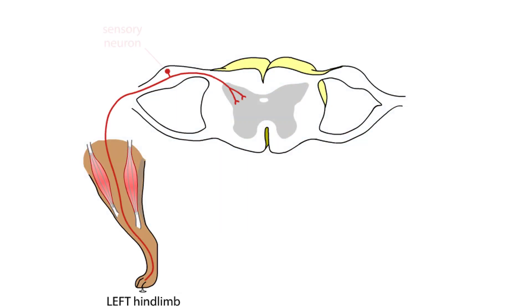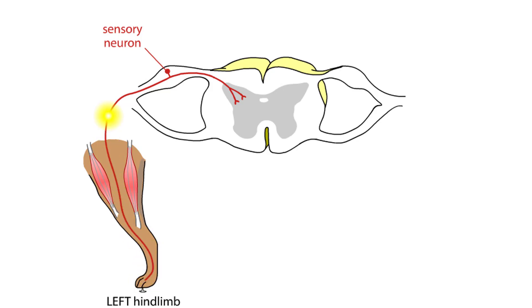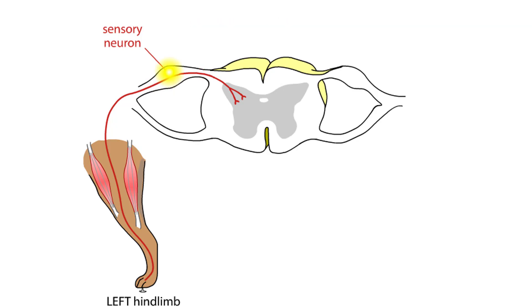The cell bodies of sensory neurons are located in the dorsal root ganglia. From the ganglia, sensory axons enter the spinal cord through the dorsal roots, where they synapse upon interneurons.